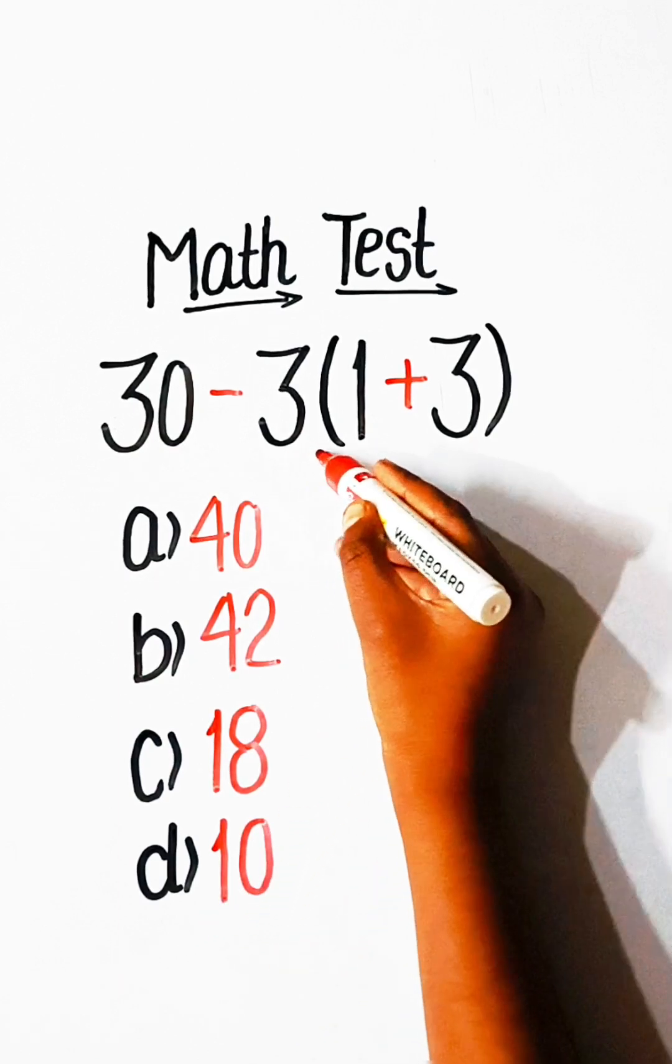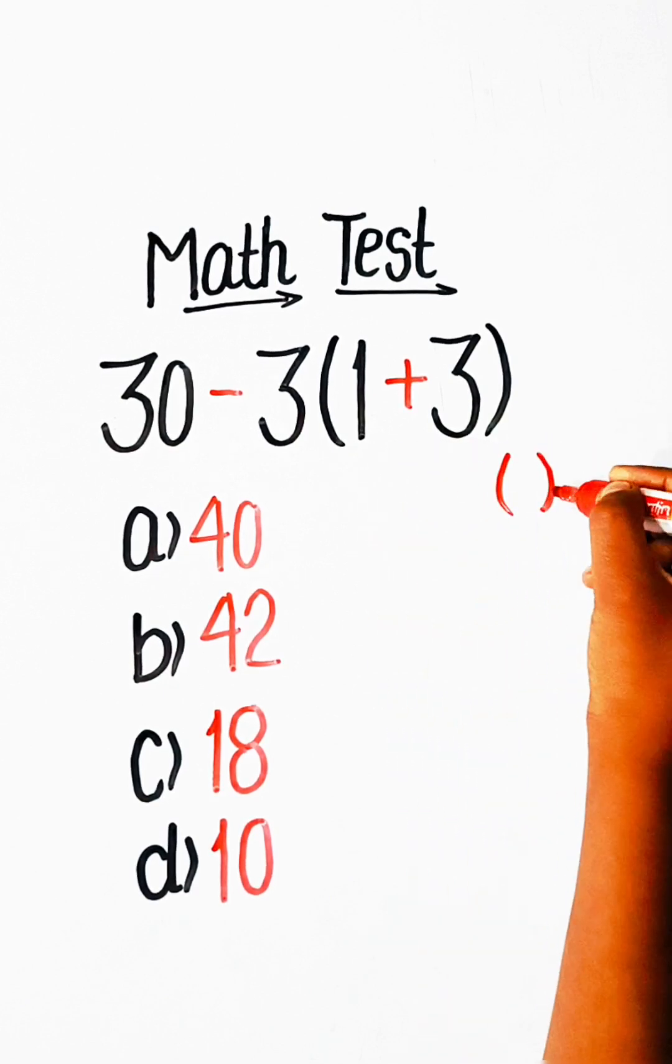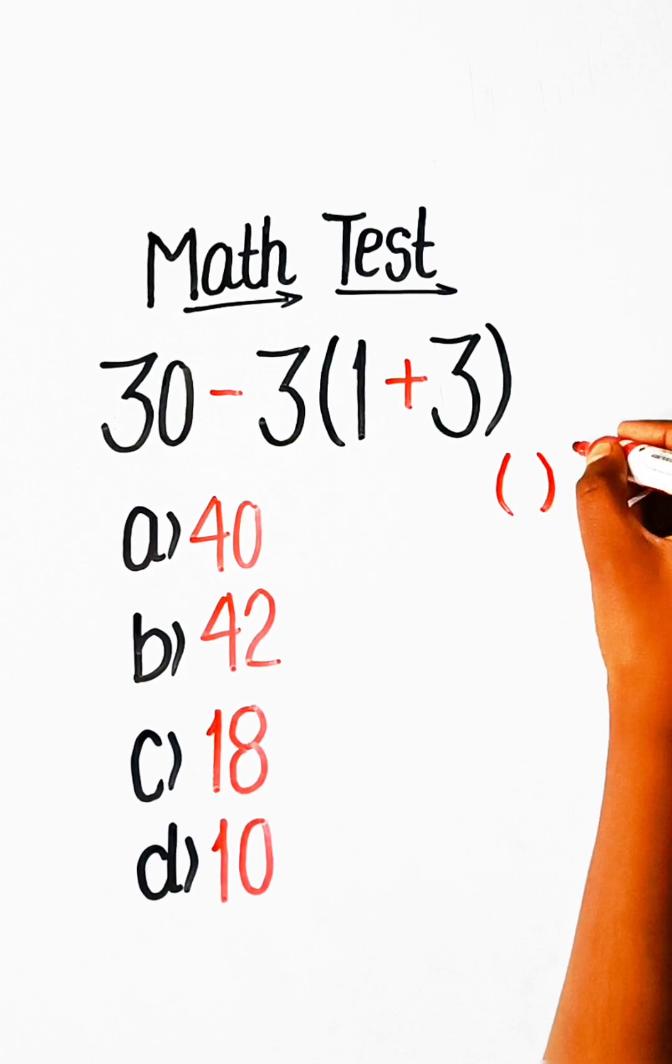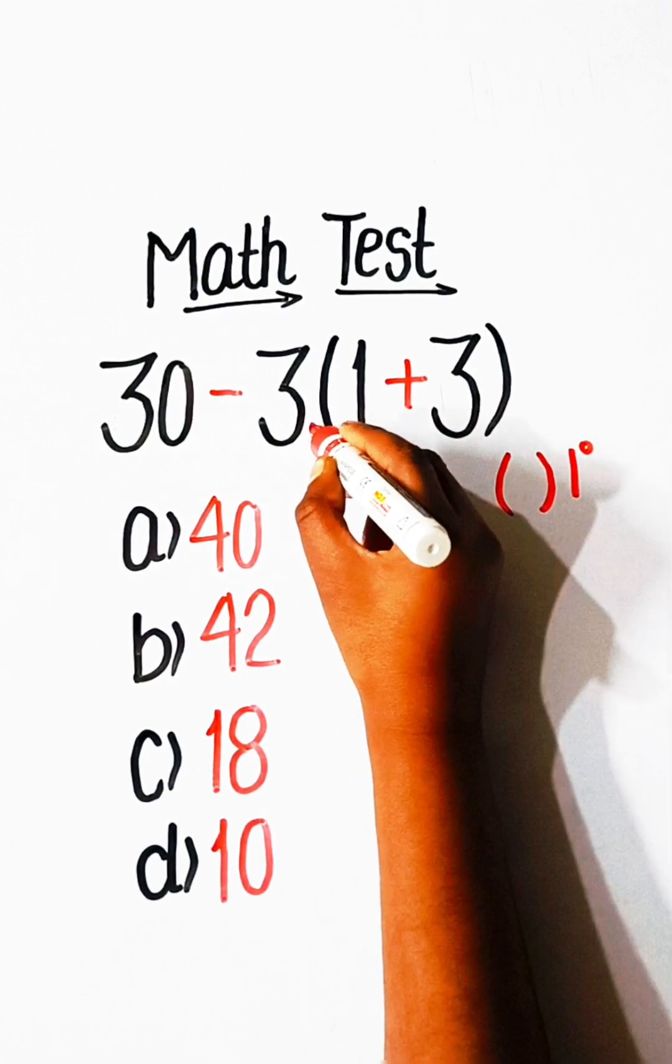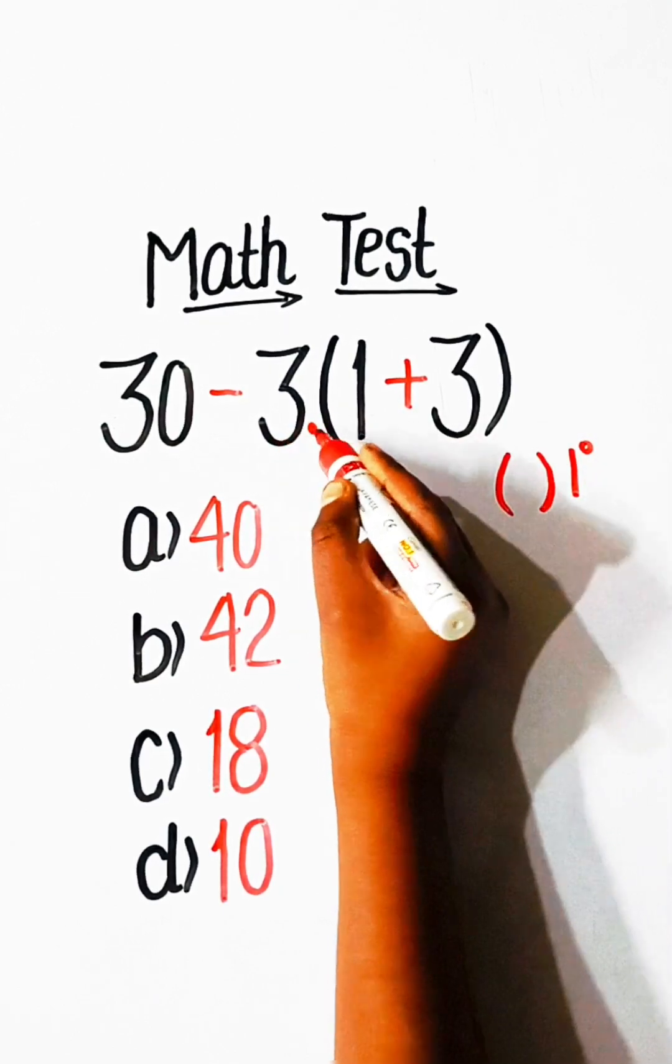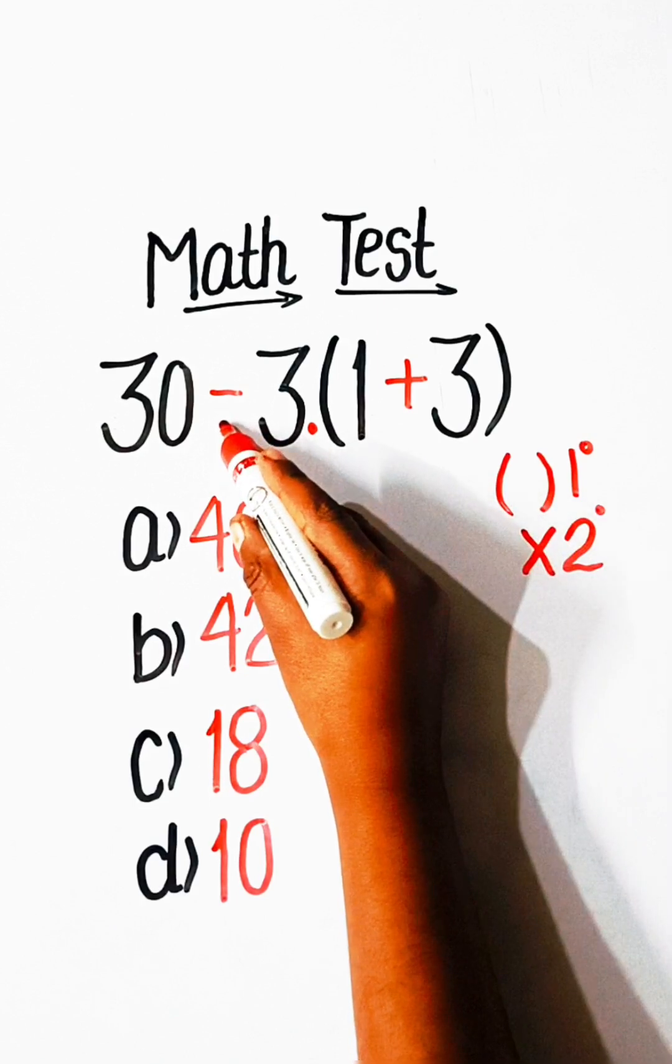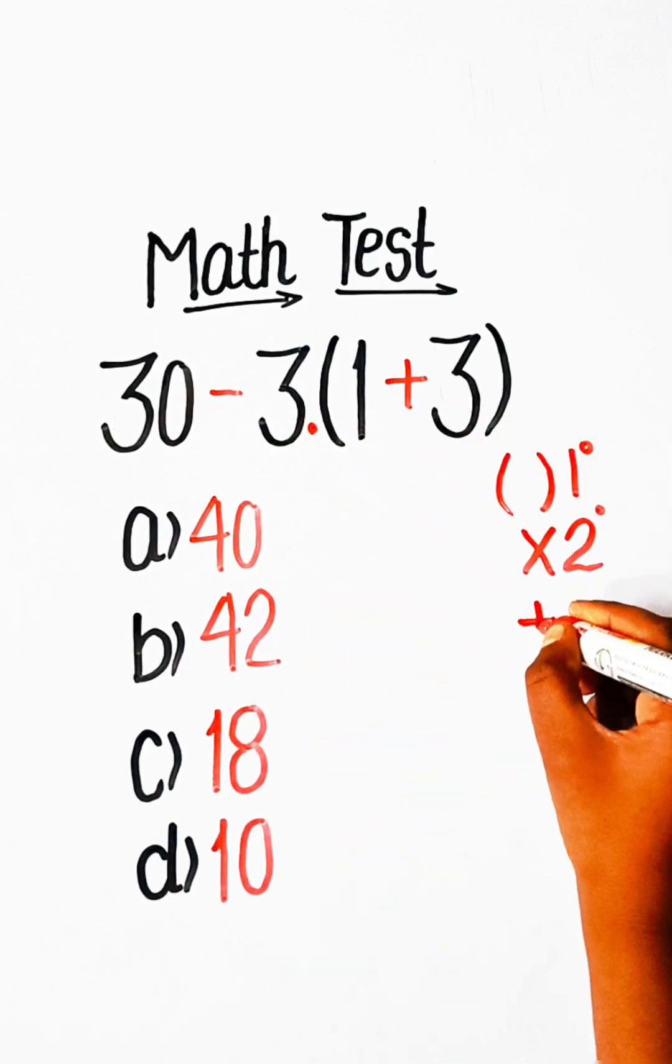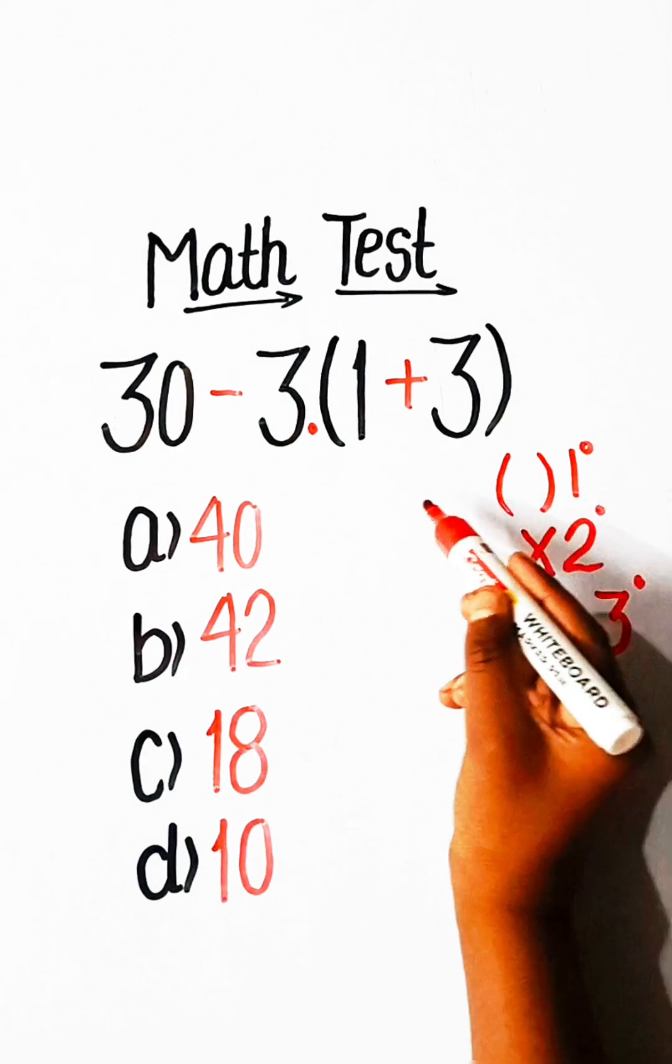So here we have bracket. We put bracket in first priority, and second we have here multiplication, and third priority plus and minus.